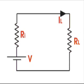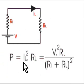From this figure, it is clear that power delivered to the load resistance is IL squared times RL, which is equal to V squared times RL divided by (Ri plus RL) squared.